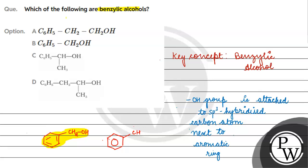दूसरी possibility में methyl group लगा रहे. यह जो carbon है SP3 hybridized है, तो किसी भी SP3 hybridized carbon से OH जुड़ा हो और इसके एक तरफ aromatic ring हो तो वो benzylic alcohol हो जाएगा.